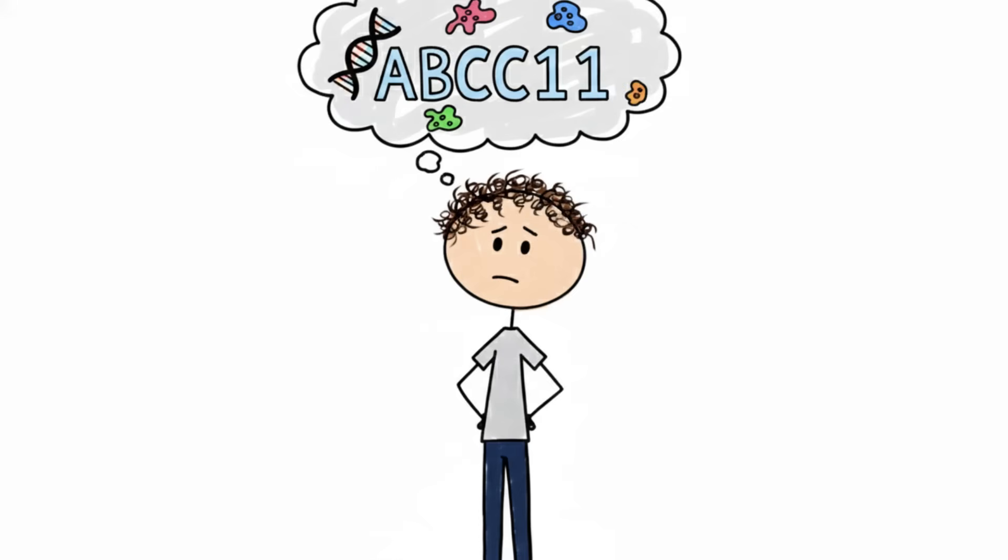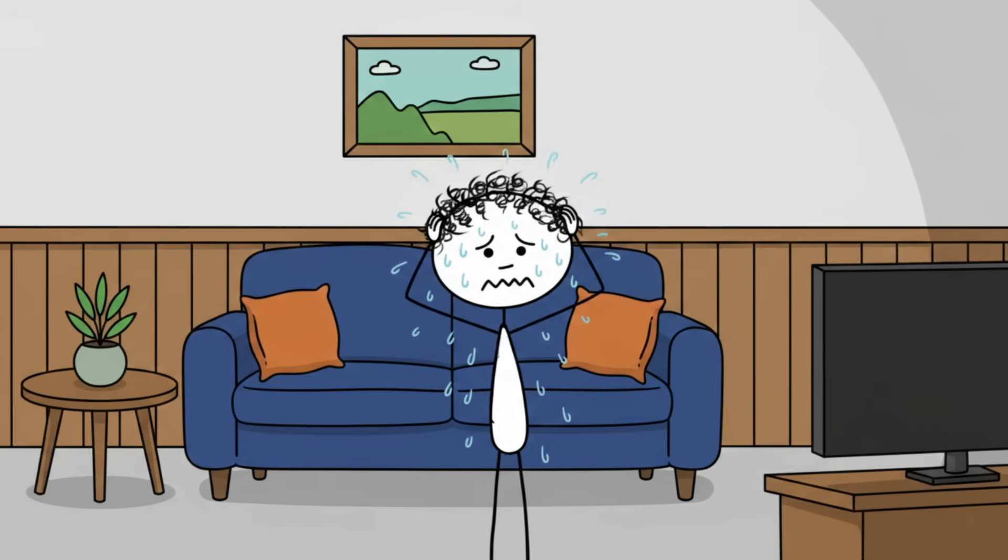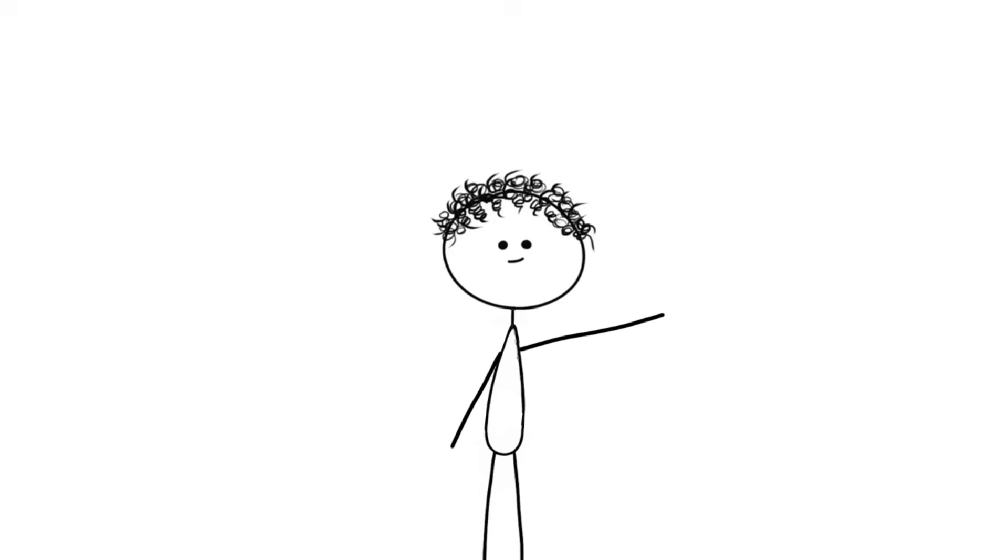For this exact reason, a certain genetic mutation in a gene called ABCC11 became incredibly successful in certain East Asian populations thousands of years ago. This mutation affects the density of sweat glands and also changes the consistency of earwax, a fascinating side effect we won't dwell on.